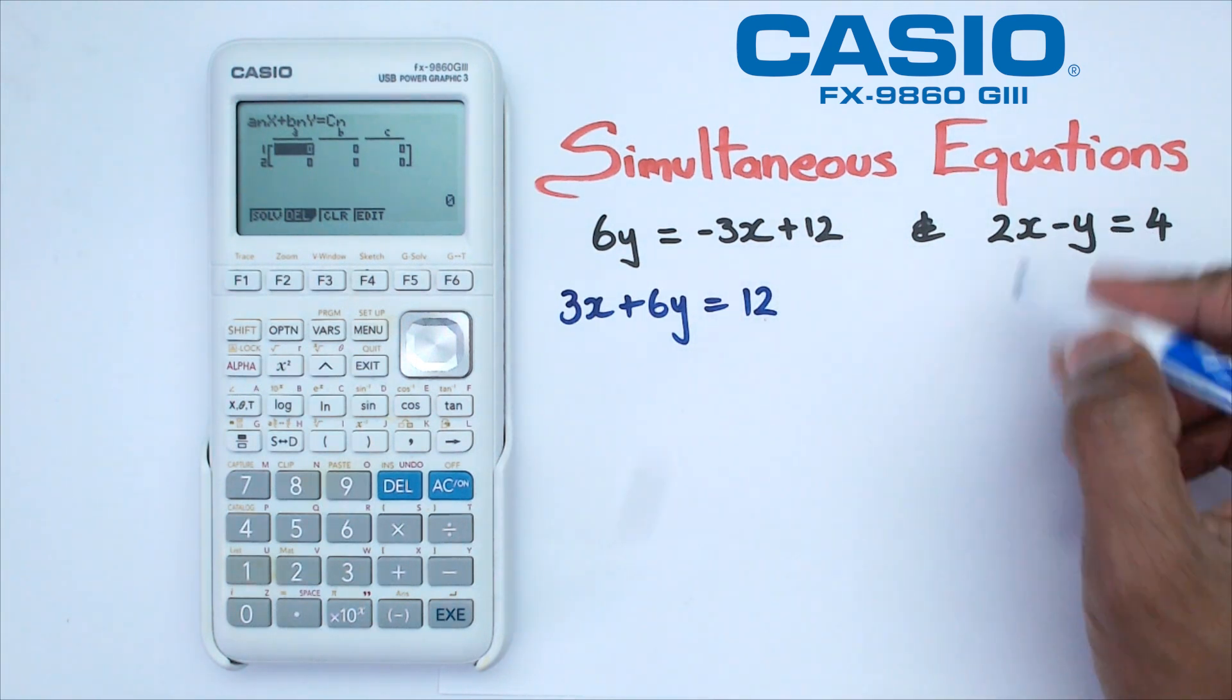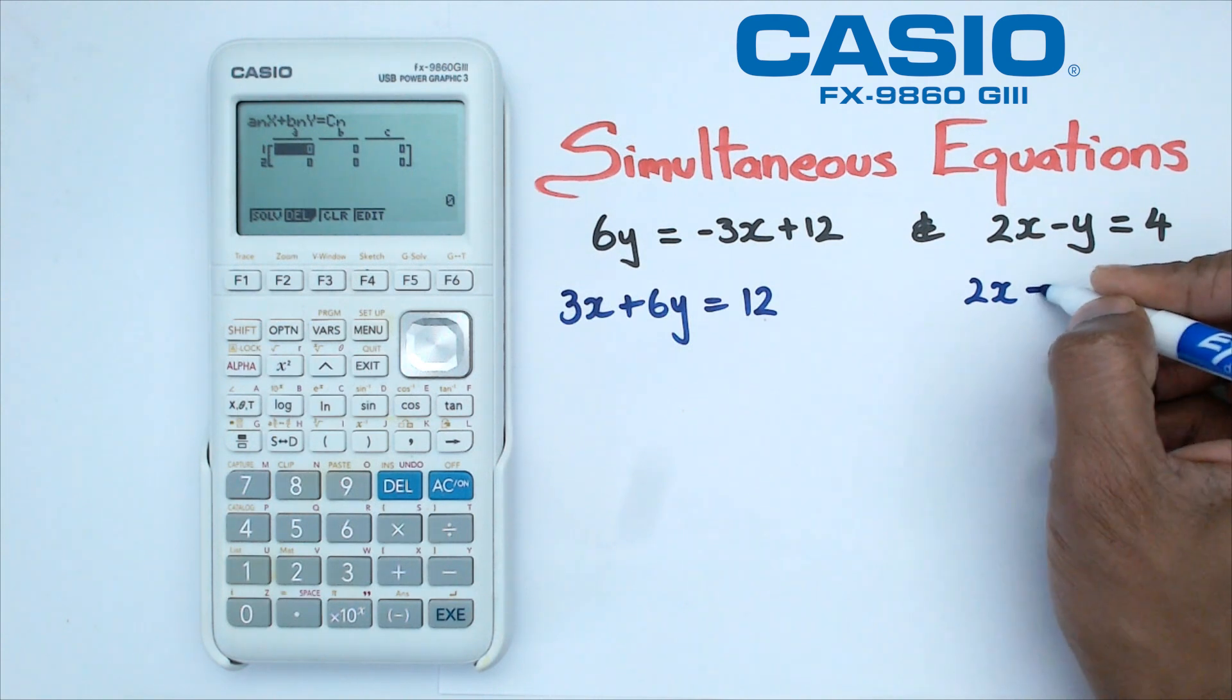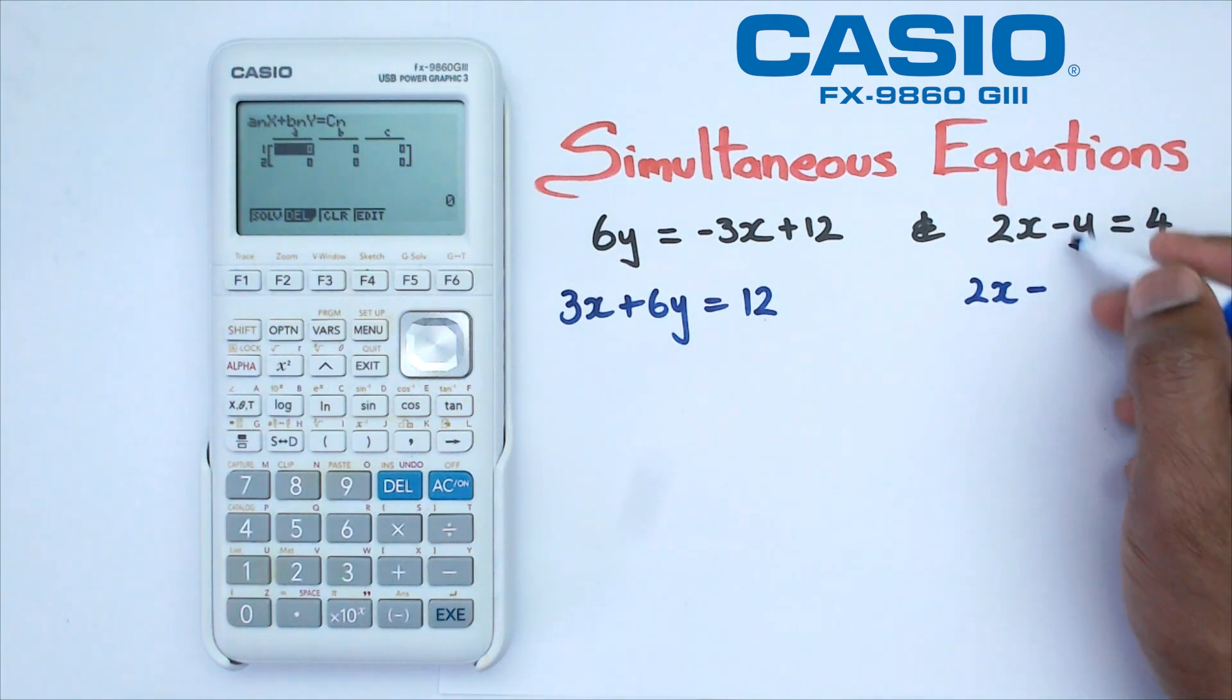And as for my second equation, I don't really do anything to it. I just leave it as 2X minus. Remember that Y has a coefficient of 1. So I'm going to put that 1 in front of the Y and equals 4.